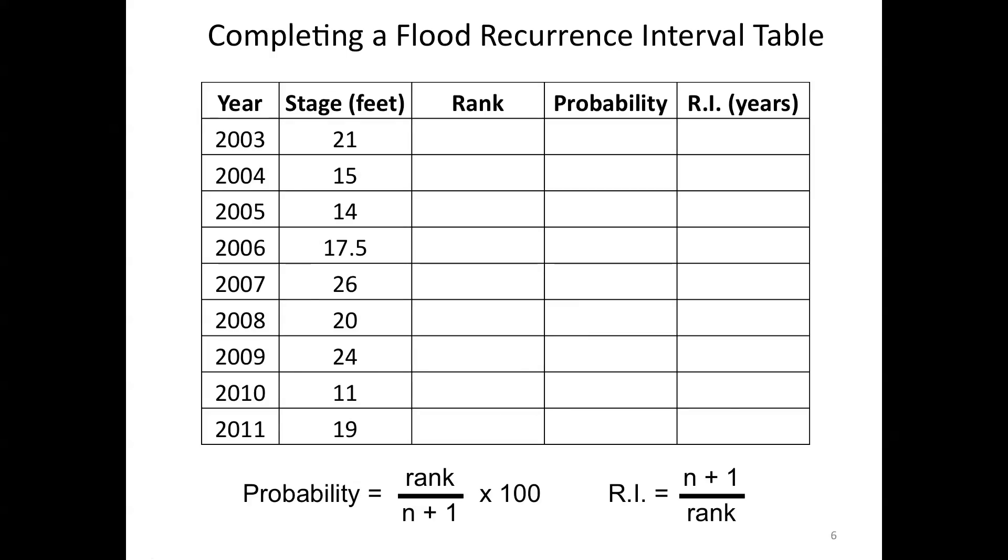So here's our table of data. We're going to order the floods according to rank. And again, the largest flood is going to have a rank of 1. You can see that in this case, it's the 2007 flood, which had a stage of 26. We'll look through the data and we'll find the second largest flood. There it is, 2009, the third largest, the fourth largest, fifth, sixth, seventh, eighth, ninth. So we've ranked the floods in order of their size.